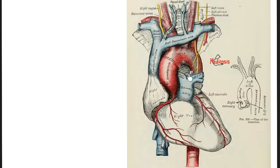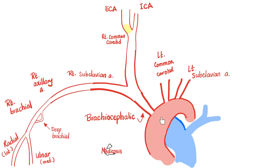The ductus arteriosus is a duct between two arteries — the aorta and the pulmonary trunk. So: aortic arch gives the brachiocephalic artery, left common carotid, and left subclavian. The brachiocephalic gives right subclavian and right common carotid. The right common carotid becomes external carotid and internal carotid. Likewise, the left common carotid divides into left internal carotid and left external carotid.